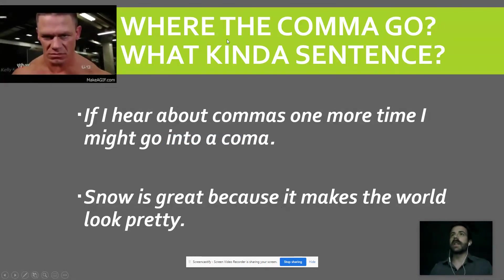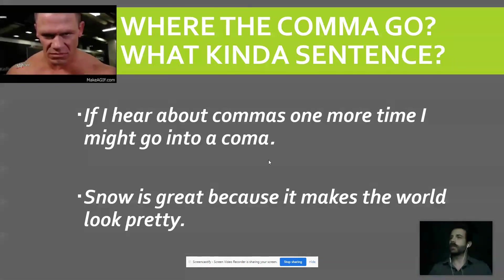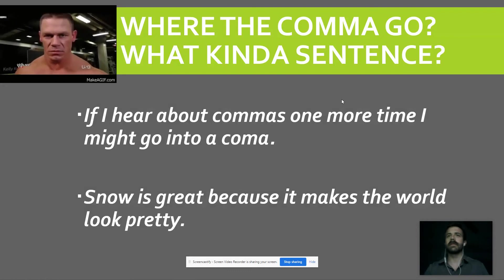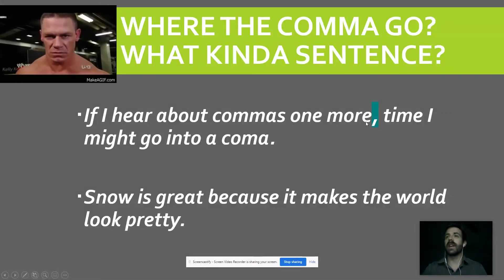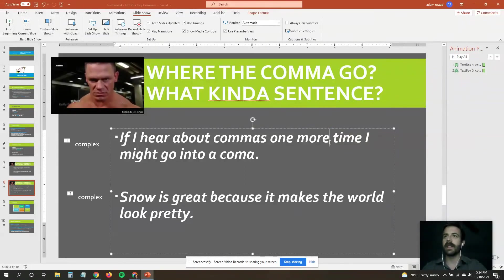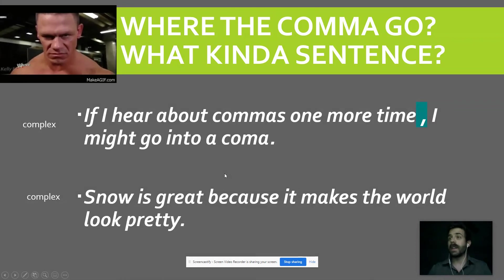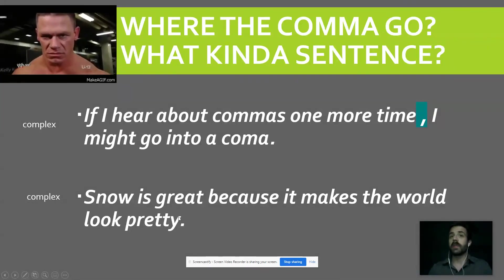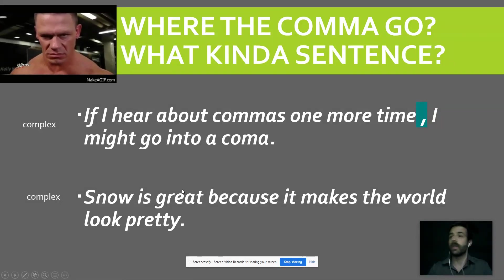Let's make John Cena proud — identify where the commas go and what kind of sentences these are. Press pause and give it a shot. Did you do it? John Cena will be angry if you didn't! The first one needs a comma because the sentence starts with a dependent clause — this would be a complex sentence. The second one is also a complex sentence but no comma is needed: "Snow is great because it makes the world look pretty." No comma because the dependent clause comes after the main part of the sentence.